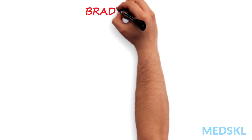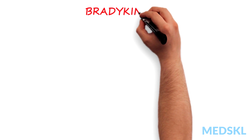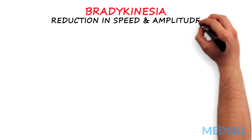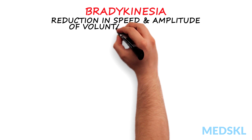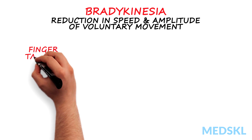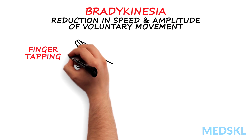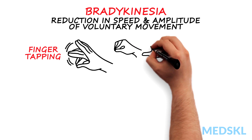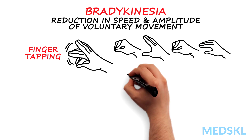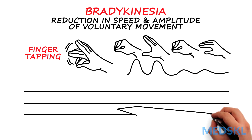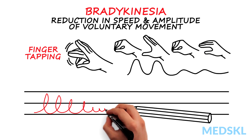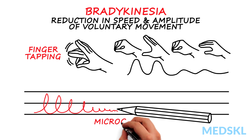The most essential feature for diagnosis of PD is bradykinesia, which is characterized by a reduction in both speed and amplitude of voluntary movement. This is most striking during repetitive movements like finger tapping, where taps are slowed and become progressively smaller in amplitude, or writing, where letter size decreases across the page, also known as micrographia.